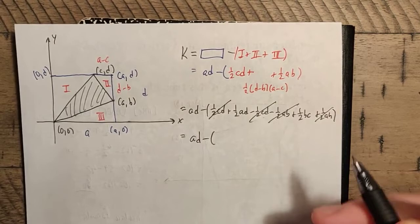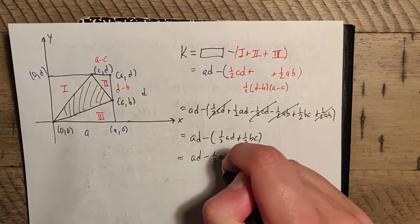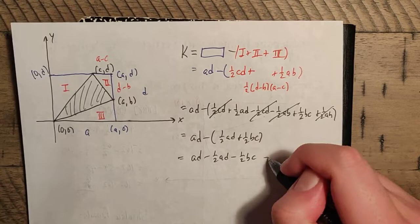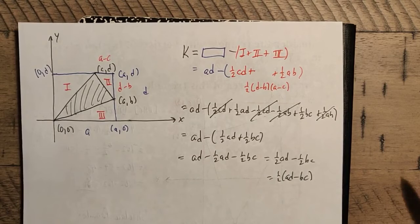After the cancellations, what survives is: ad − ½ad − ½bc. That simplifies to ½ad − ½bc, which equals ½(ad − bc). So the area of the triangle is K = ½(ad − bc).